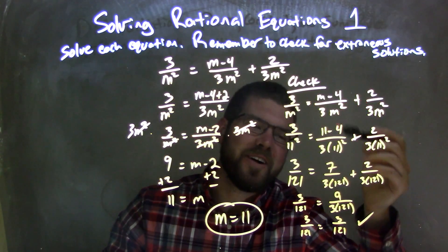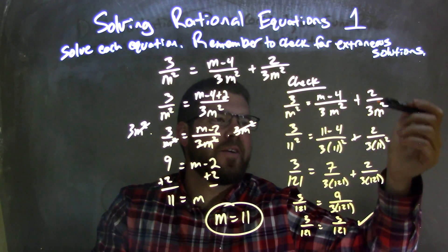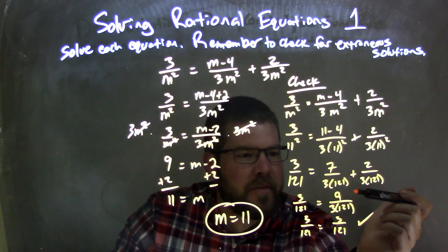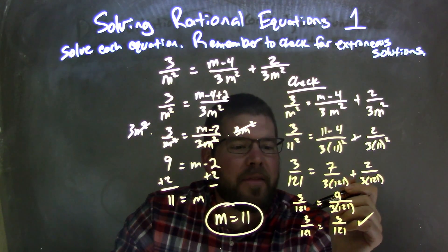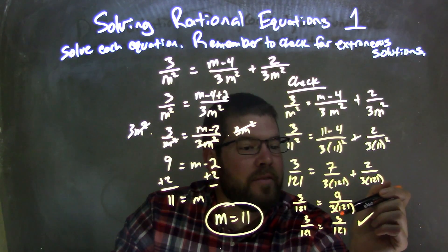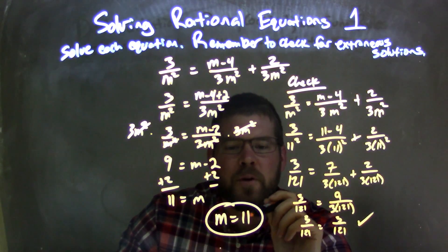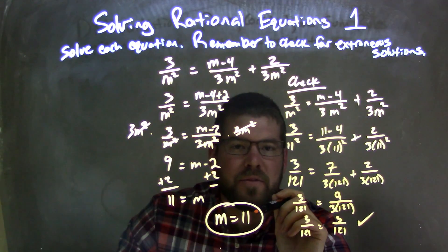I plugged it back in and made sure I eventually realized I wrote the whole equation, right? Plugged 11 in for m. Simplified, simplified, simplified, kept everything on both sides. Got that 3 over 121 was equal to 3 over 121. Fantastic. Both left and right sides are equal. Great. Confirming that our final answer is m equals 11.